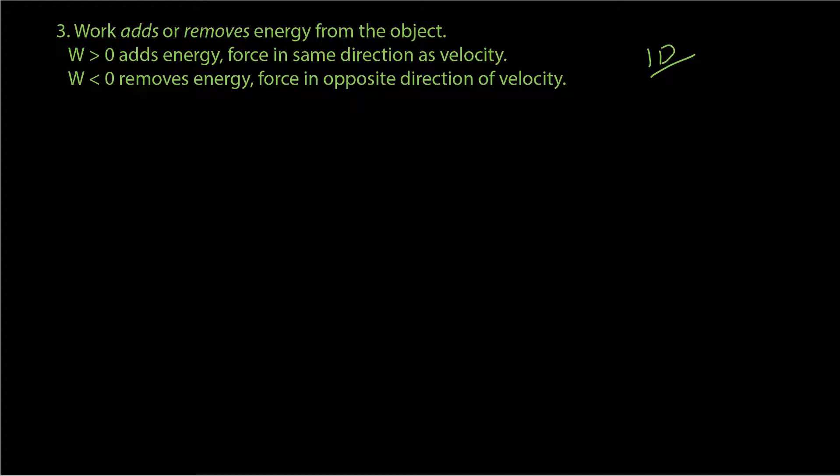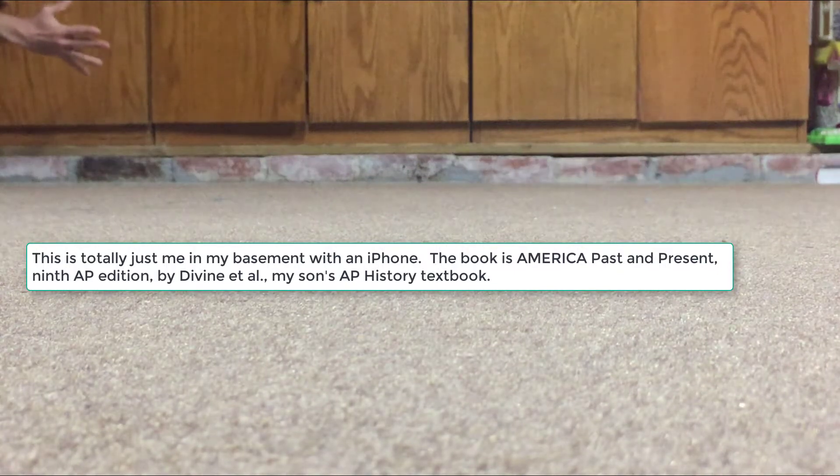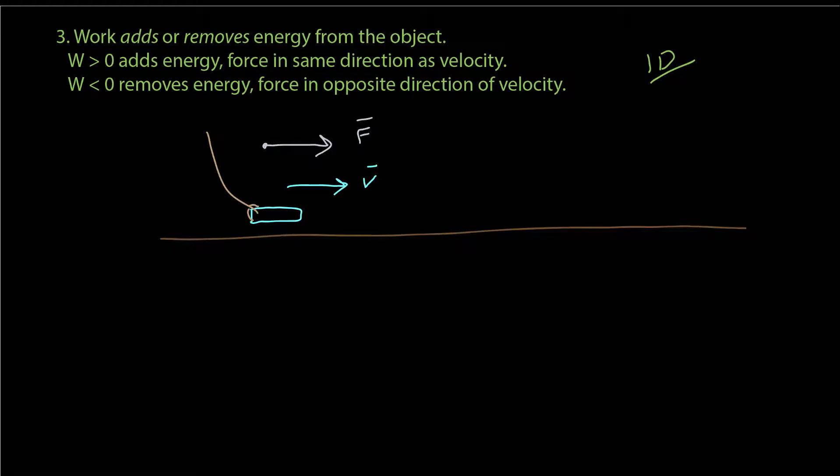Note that in one dimension, the force can only ever be in the same direction or opposite direction. Let's take a look at a video where a book slides across the room. So in that first step, where the person is throwing the book, the person is exerting a force on the book. In fact, that force is in the same direction as velocity, and so that force is adding energy to the book. Eventually, the book is sliding, and when it's sliding, the force is in the opposite direction of the velocity. And so that force, which we know as friction, is removing energy from the book.